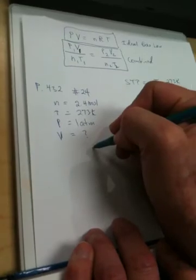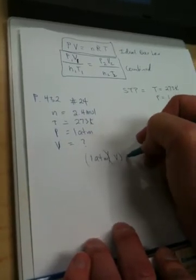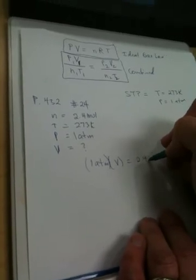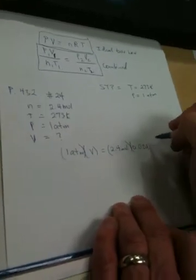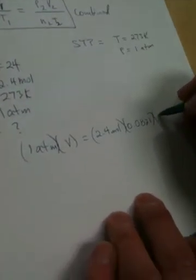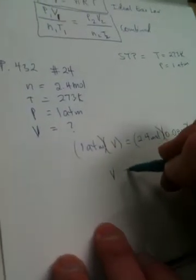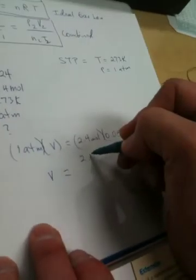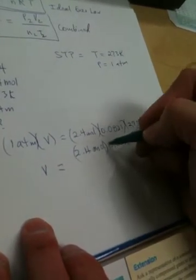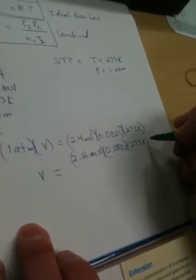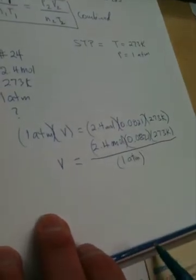Now we're just going to plug them all in. So pressure is 1 atmosphere. Volume is going to be unknown. And the N is 2.4 moles. The R is always going to be 0.0821. And the T is going to be, in this case, 273 because it's at STP. And now what we're going to do is we're going to solve for V. So our V is going to be 2.4 moles times 0.0821 times 273 Kelvin. And on the bottom we're going to divide both sides by 1 atmosphere.